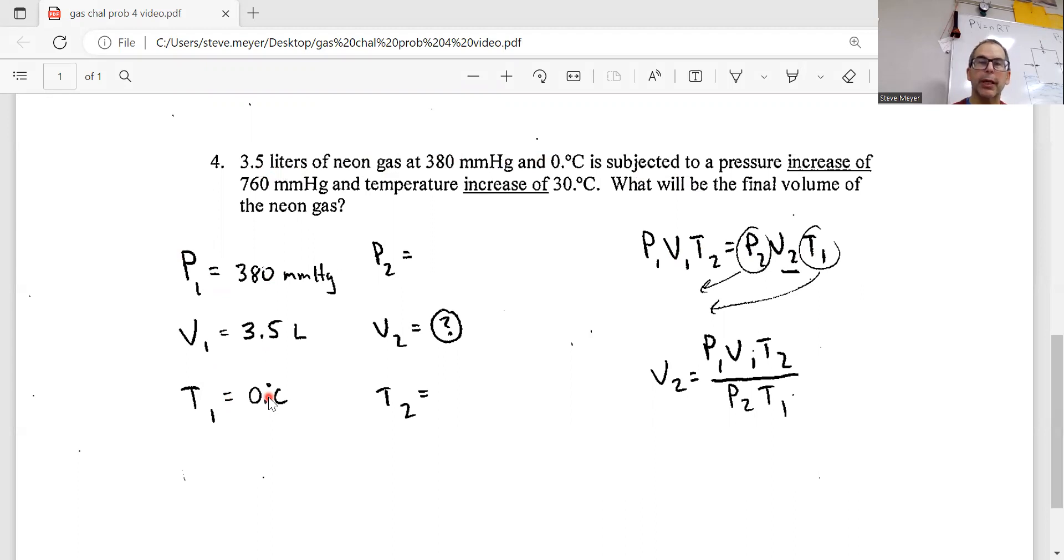Maybe just one adjustment to this is we can do pressure in millimeters mercury as long as this other pressure is in millimeters mercury. We can do volume in liters as long as the other volume's in liters. We always have to use Kelvin for our temperature because Kelvin is the scale with a zero basis, where zero is as cold as it gets.